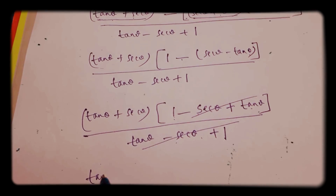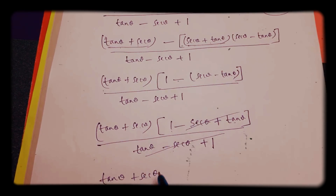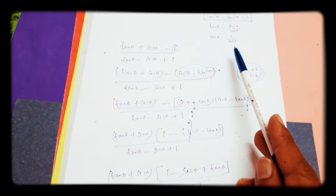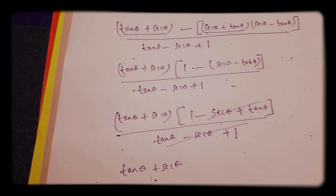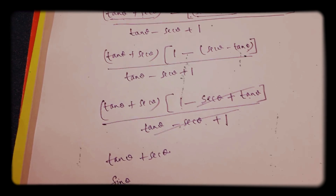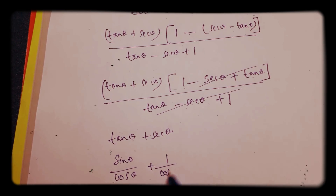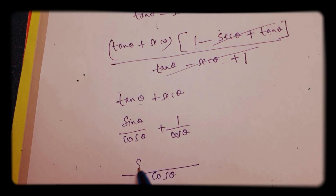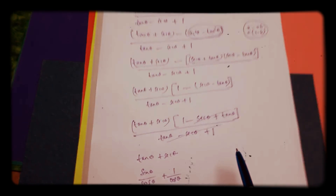Now we are left with tan θ + sec θ. Substituting: tan θ = sin θ / cos θ and sec θ = 1 / cos θ. The LCM is cos θ, so this gives (sin θ + 1) / cos θ, which equals (1 + sin θ) / cos θ. This completes the proof.